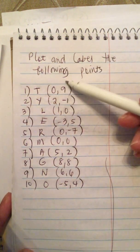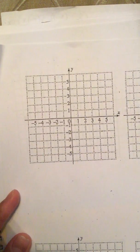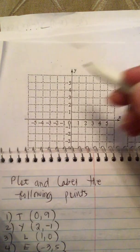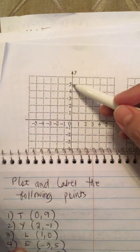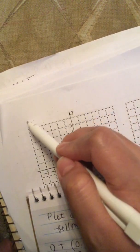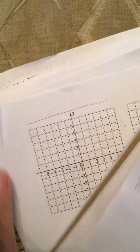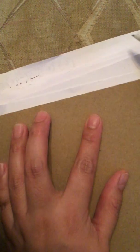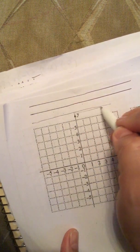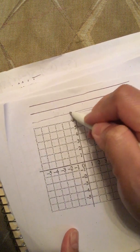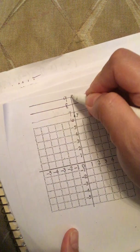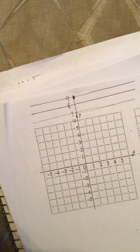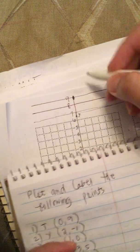We need to plot and label the following points. We plot them here. The first point is zero comma nine. This goes up to five, so we need more squares. Six, seven, eight, nine — so this is the point zero comma nine.